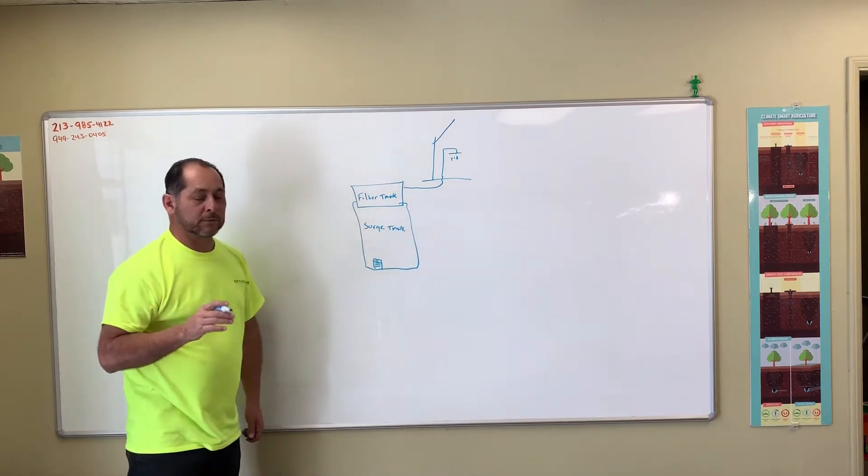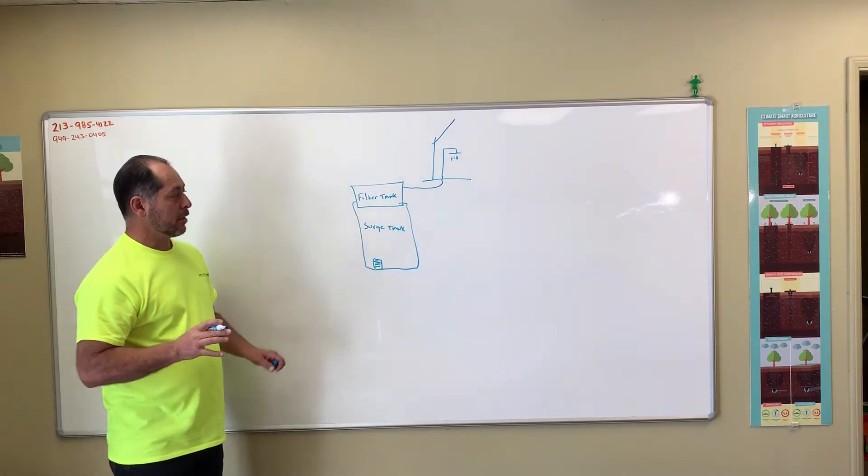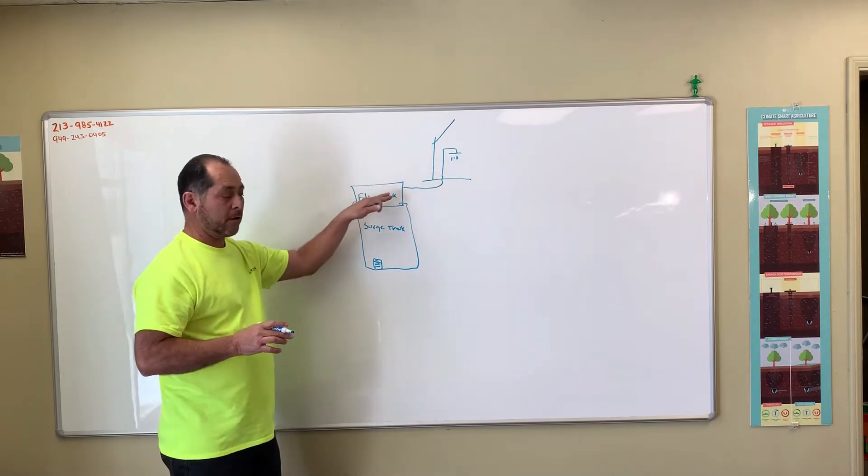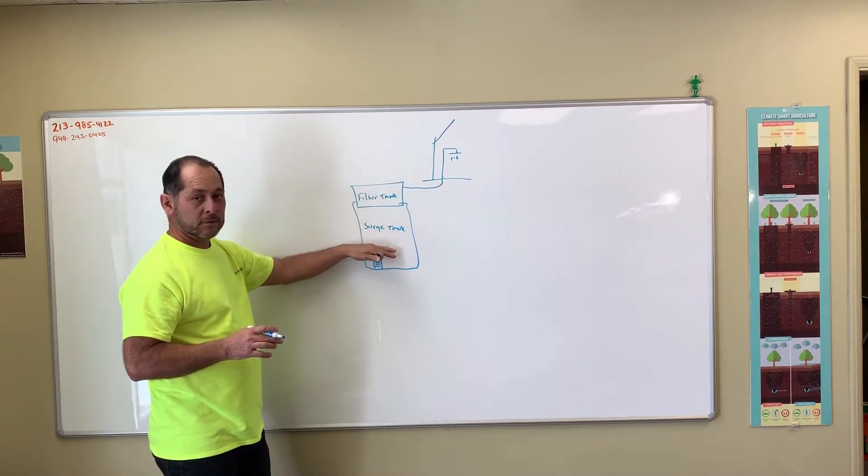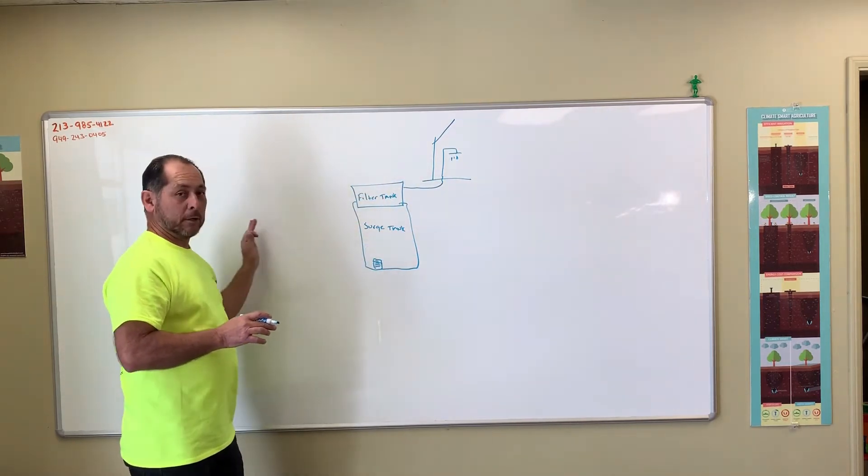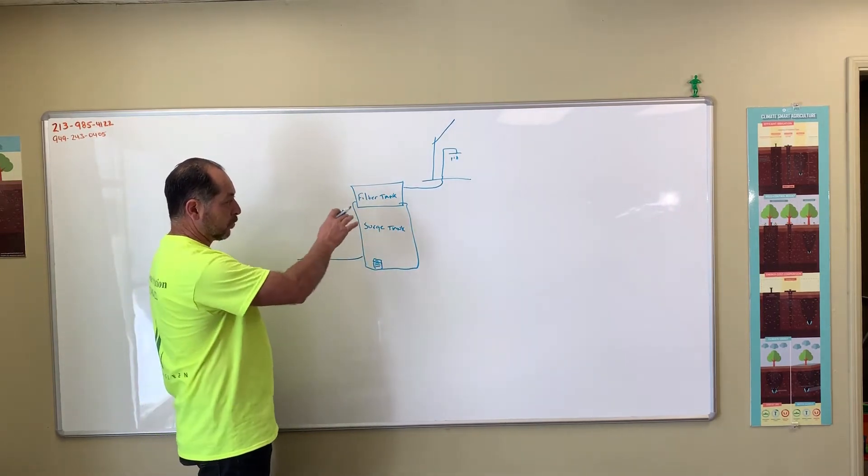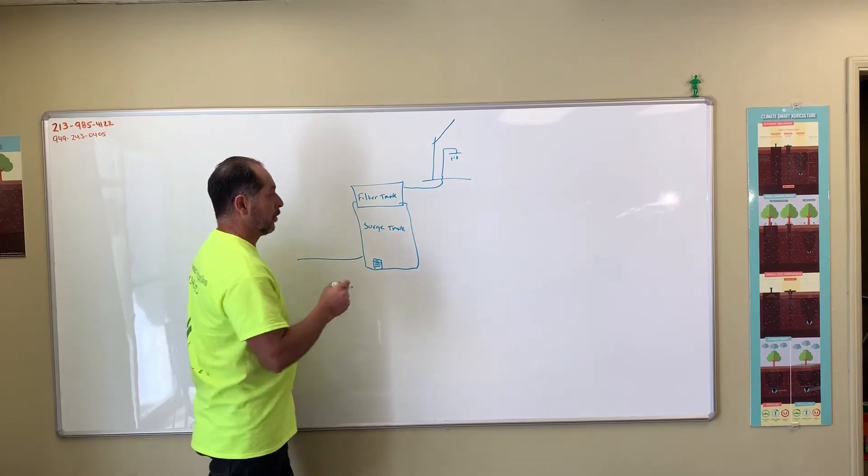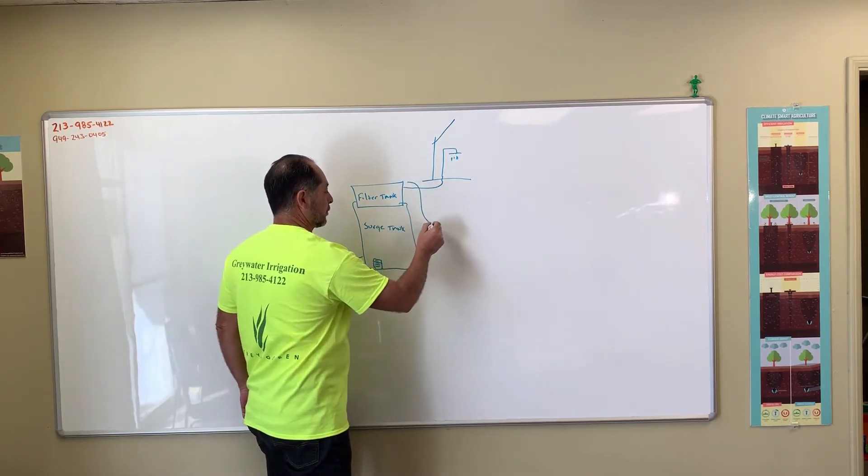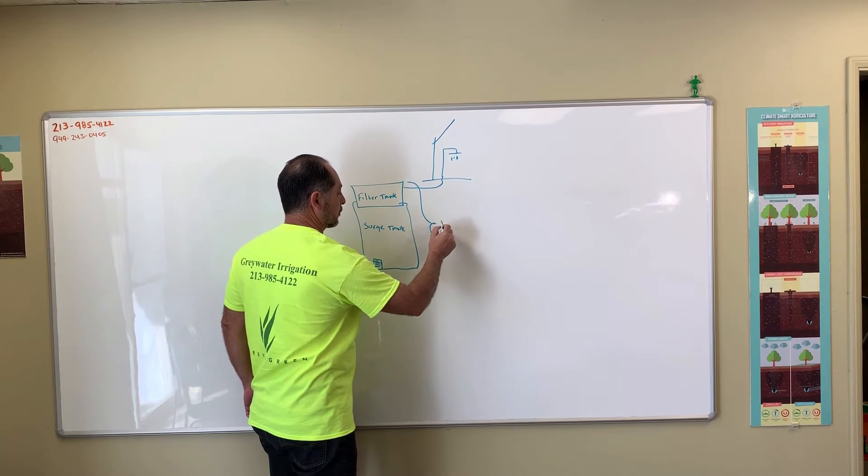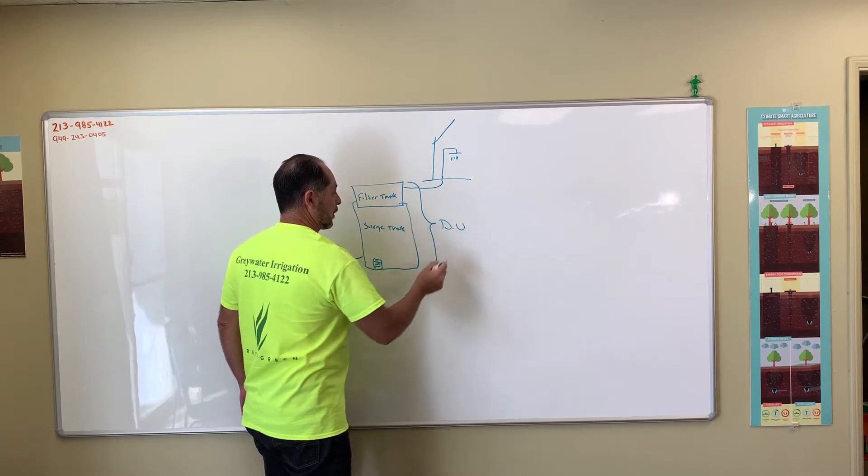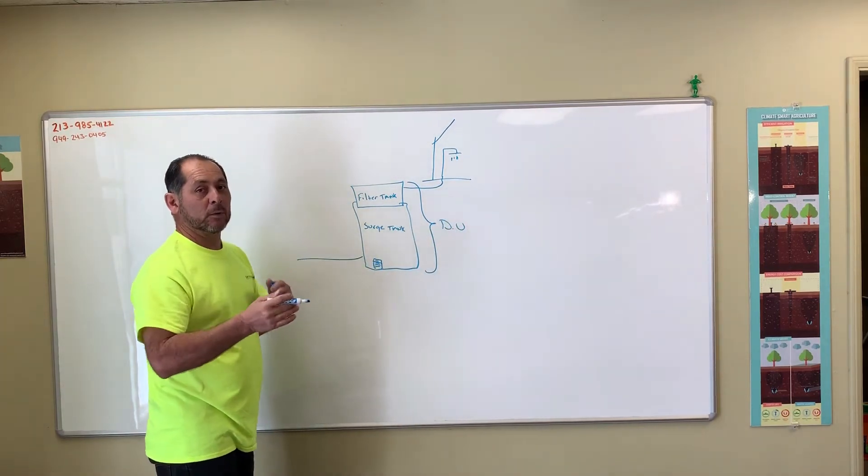Now all the systems are flow-through systems, meaning that as the water comes off the shower it's going to collect in this surge tank but it's going to be pumped out right away straight out to the yard. In this case you're going to come out this way. With this total unit we're going to call it a distribution unit, that way whenever we refer to anything you'll know what we're talking about.